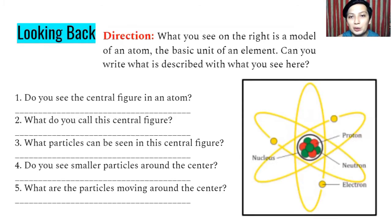So before we start, let's have a short look back. In this part, all you have to do is to observe the illustration here on your right. What you see on the right is a model of an atom, the basic unit of an element. Can you write what is described with what you see here? You can write it on your paper or your notebook there at home. Since you're done observing this illustration of the atom, the question is, do you see the central figure in an atom?